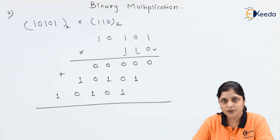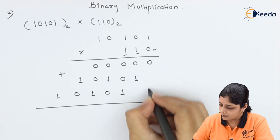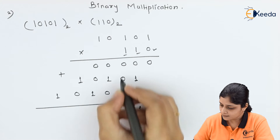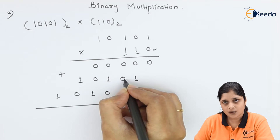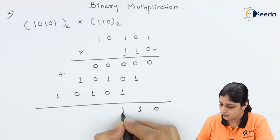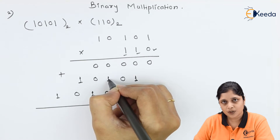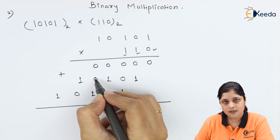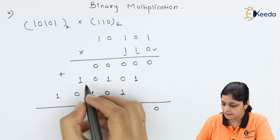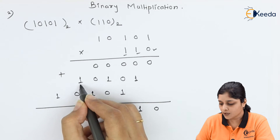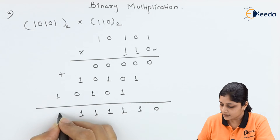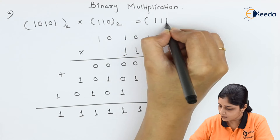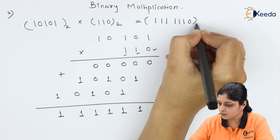Now perform binary addition: 0 as it is, 0 plus 1 is 1, 0 plus 0 is 0, 0 plus 1 is 1, 0 plus 1 is 1, 1 plus 0 is 1, 0 plus 0 is 0, 0 plus 1 is 1. For the remaining terms, 1 plus 0 is 1, and the last 1 as it is. The final answer is 11111110 base 2.